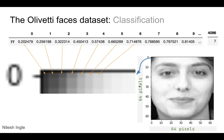Here is one example: we are looking at an image at index 77, shown on the right-hand side as 64 by 64 pixels. If we pull the very first row of pixels, the grayscale values are shown by the numbers listed in the table.